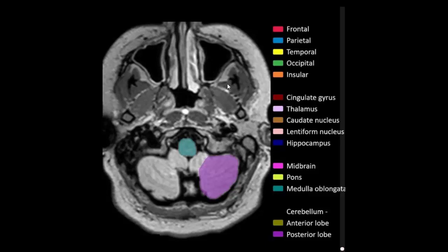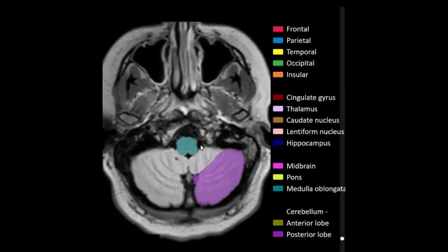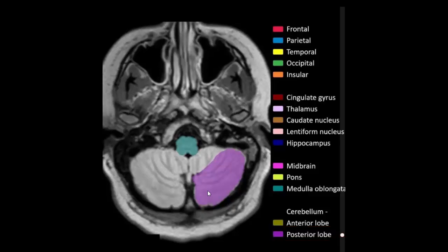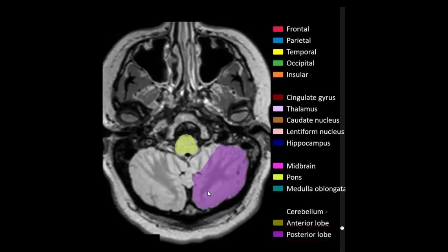Right and left temporalis muscle. Right and left lateral pterygoid muscle. Medulla oblongata. Right and left posterior lobe of cerebellum. Right and left maxillary sinus. Medulla oblongata.